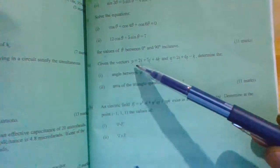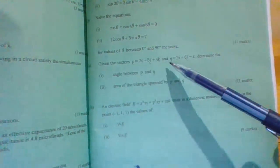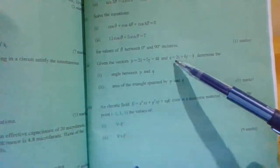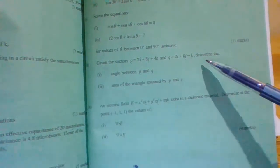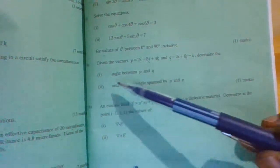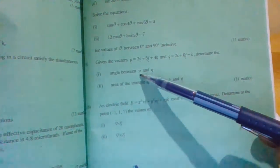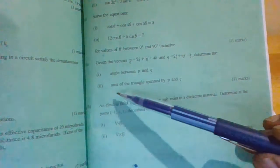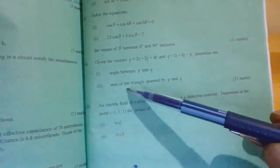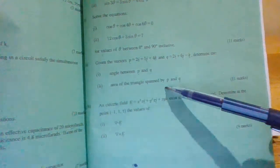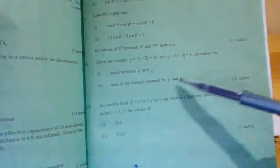Given the vectors p equals to this and vector q equals to this, determine: Roman 1, angle between vector p and q; Roman 2, area of the triangle spanned by vector p and q.